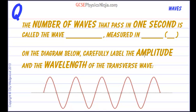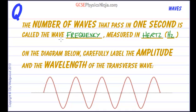The number of waves that pass by in one second is called the wave frequency. Frequency is measured in hertz, with a shortening of capital H, lowercase z. Wave frequency is waves per second, or oscillations per second, where a complete oscillation is all the way back to where it started. That's one complete oscillation.